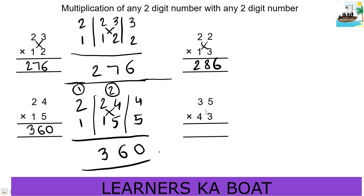Okay, let's do this. First step, right side: 5×3 is 15 — write 5, carry 1 forward. Next, 2nd step: 3×3 is 9, plus 4×5 is 20, so 9 plus 20 is 29, plus carry 1 is 30. Write 0, carry 3 forward.